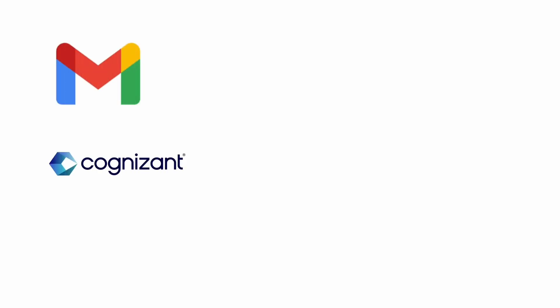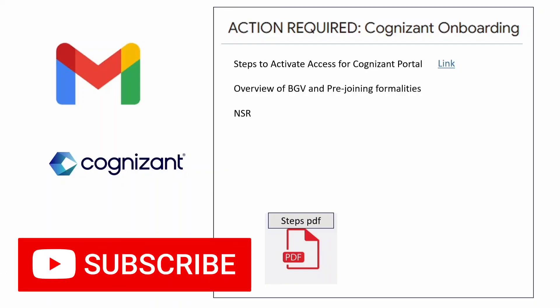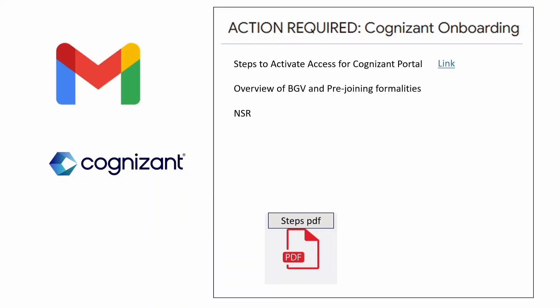That same day you will receive another mail saying 'Action Required: Cognizant Onboarding.' This mail is for accessing the Cognizant onboarding portal, which contains your offer letter to review and accept, background verification steps, pre-joining formalities, and everything needed to get your onboarding pass ready. But before accessing this portal you need a Microsoft account linked with Cognizant.